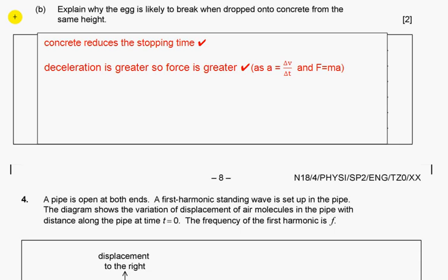Explain why the egg is likely to break when dropped onto concrete from the same height. Concrete reduces the stopping time. The acceleration is greater, so force is greater. As a equals Δv/Δt, if Δt is smaller, a is greater and F is greater.